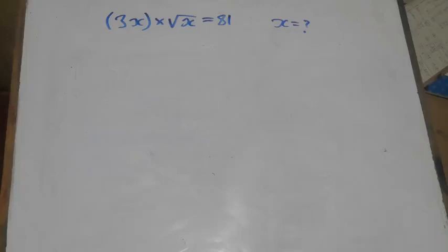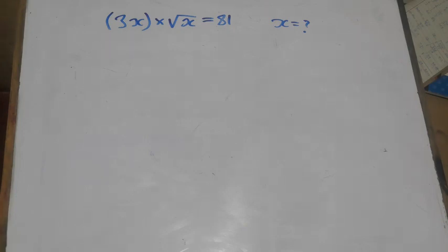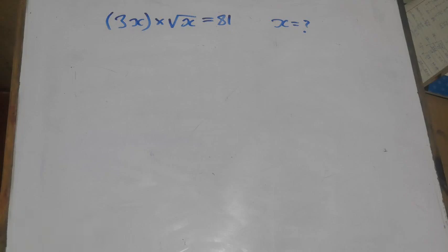Solve for x: (3x) times square root of x equals 81. This question is under exponential equations; to be specific, it is coming from the unknown base problem.